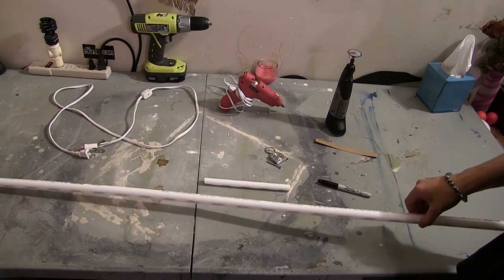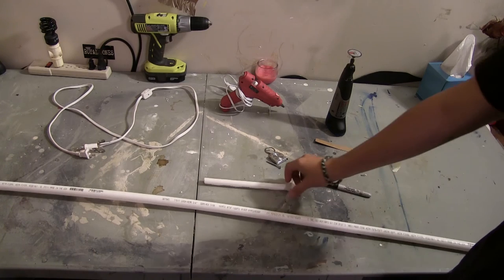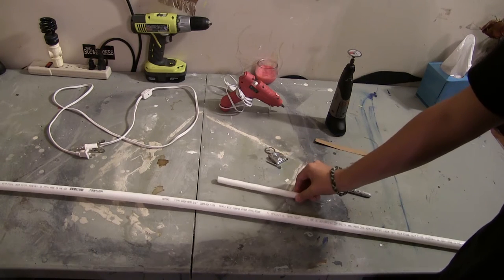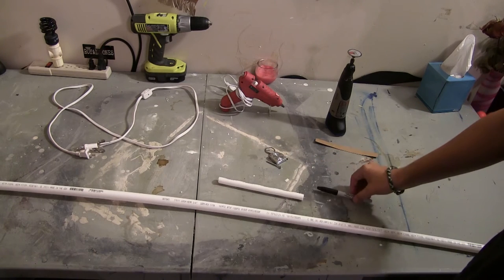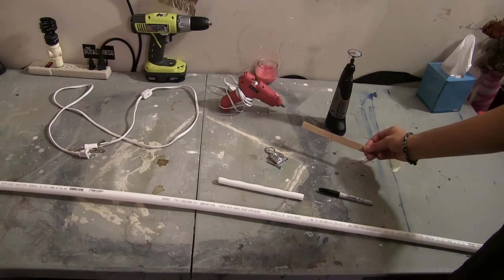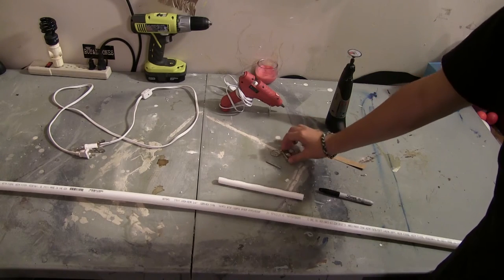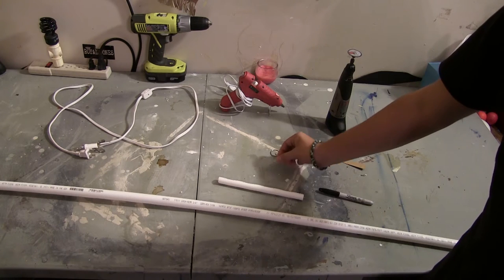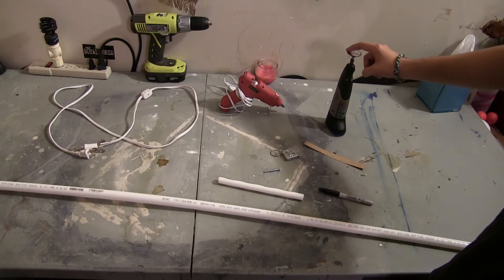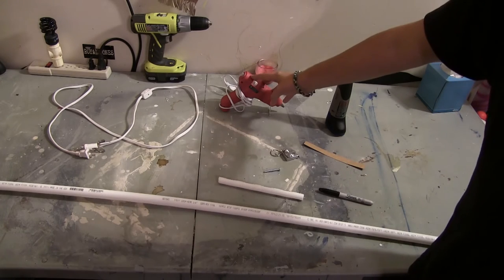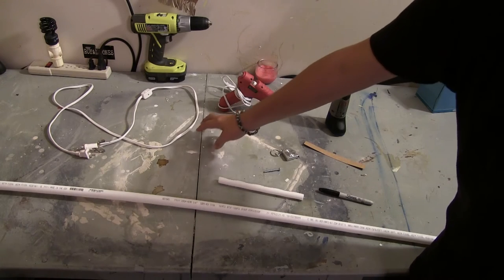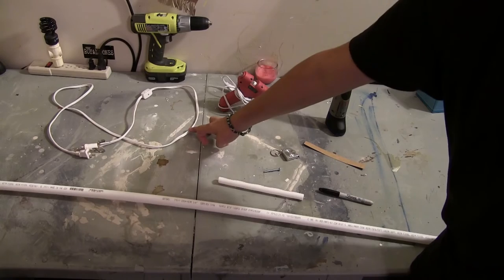Alright so some things you're going to need for this are a three quarters inch piece of PVC pipe, a half inch thing of PVC pipe, a permanent marker, some scrap cardboard, a tape measure, a screw, a dremel or hacksaw, a hot glue gun, and a corded light.